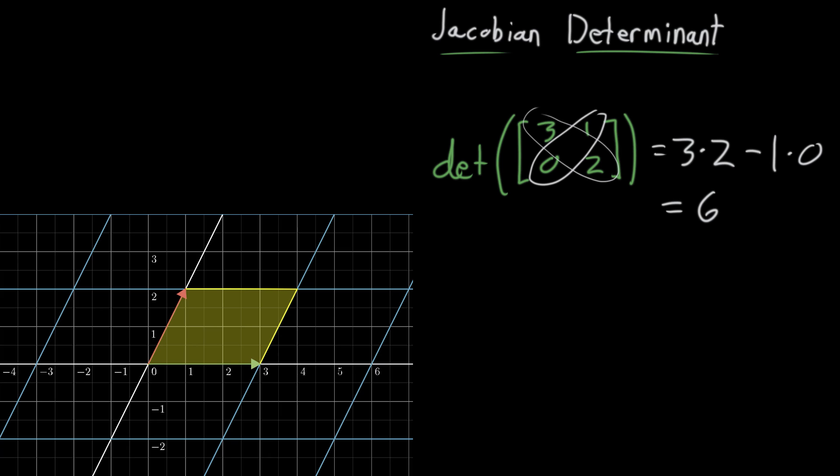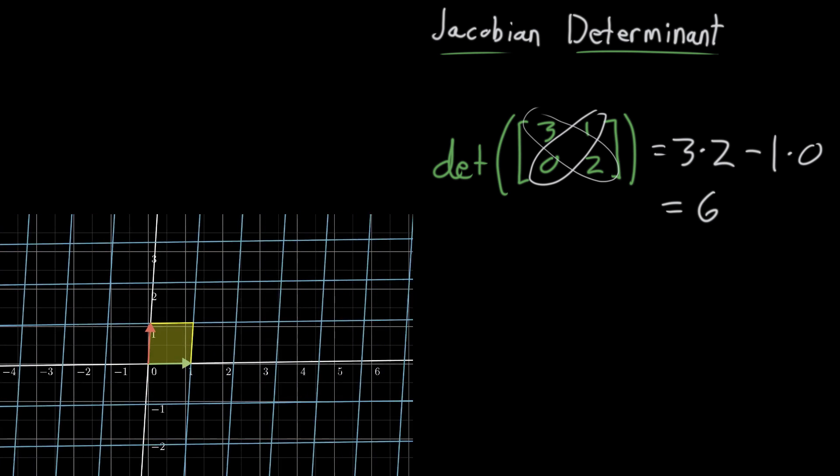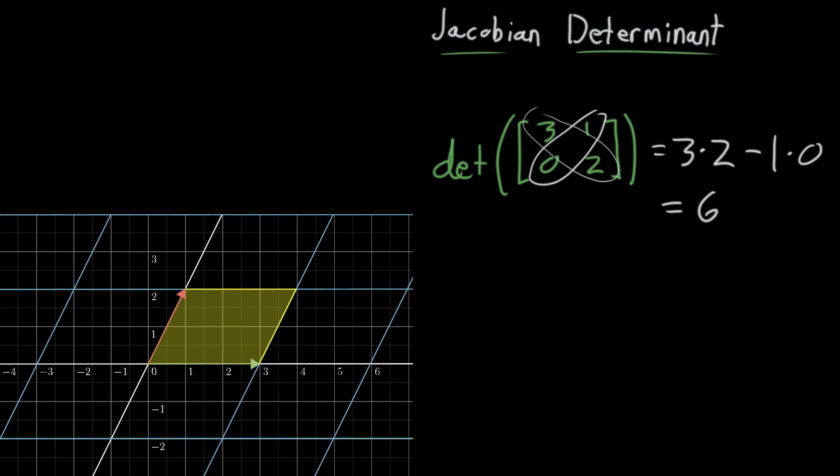you can think of the determinant as measuring how much this transformation stretches or squishes space. In particular, you'll notice I have this yellow region highlighted. This region starts off as the unit square, a square with side lengths 1 so its area is 1. There's nothing special about this particular region; it's just nice as a canonical shape with an area of 1 so that we can compare it to what happens after the transformation. We can ask, how much does that area get stretched out? And the answer is it gets stretched out by a factor of the determinant.